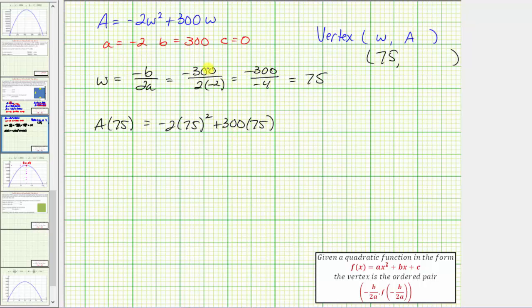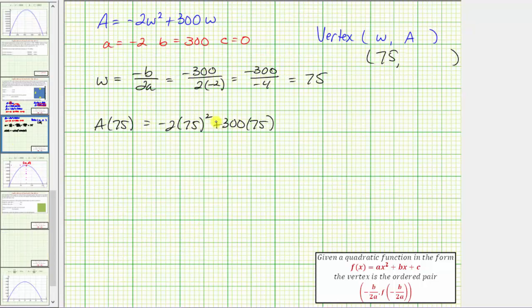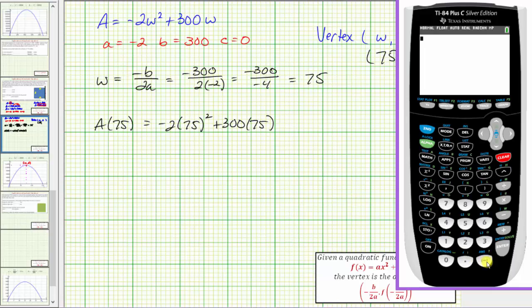Of course, we could also use the factored form of our area equation, which we have here, but we'll go ahead and leave it in this form. And now we'll go to the calculator. We have negative 2, and then in parentheses, 75 squared plus 300 times 75, which gives us 11,250.